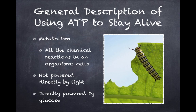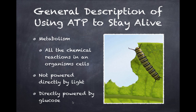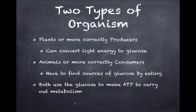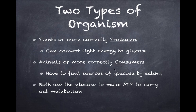A general description of using ATP to stay alive means we're talking about metabolism — all the chemical reactions in an organism or in its cells. That metabolism, those chemical reactions, are not powered directly by light; they're directly powered by ATP, which is built using the energy from glucose. So whether you're a producer or a consumer, you use that glucose for the same thing: to make ATP so that you can carry out metabolism.